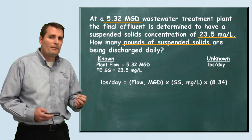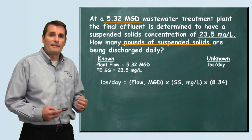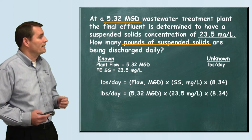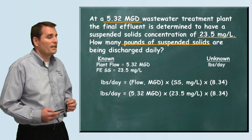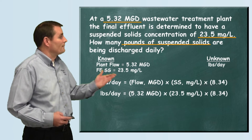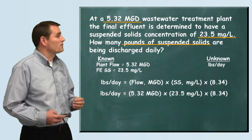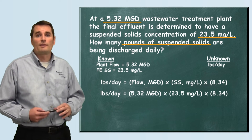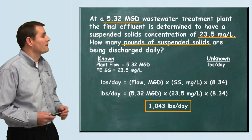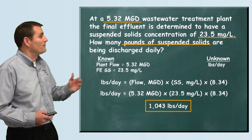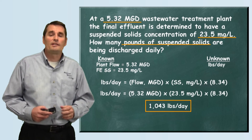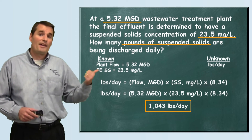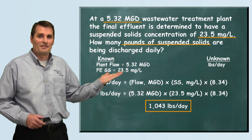Now that we've pulled the numbers out, it's simple to plug them in and do the math. Pounds per day equals 5.32 MGD times 23.5 milligrams per liter times 8.34, and when we do this math we find that we're discharging 1043 pounds per day. And that is how this problem is solved.